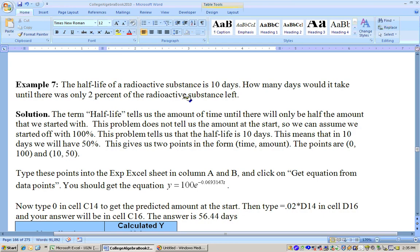On this problem, it says the half-life of a radioactive substance is 10 days. How many days would it take until there was only 2 percent of the radioactive substance left? Half-life is in 10 days. What that means is in 10 days, you only have half as much as what you started off with. It doesn't even tell you how much you started off with, so we could say we started off with 100 percent or 100, whatever you like, just so we were consistent on it.